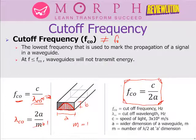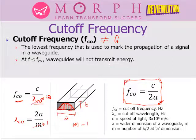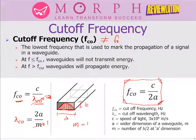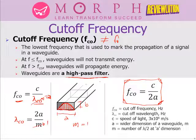At a frequency of operation less than or equal to the cutoff frequency, the waveguide will not transmit energy. But if the frequency is greater than the cutoff frequency, the waveguide will propagate the energy. This tells us that waveguides are high-pass filters — a key difference from transmission lines, which are low-pass filters.